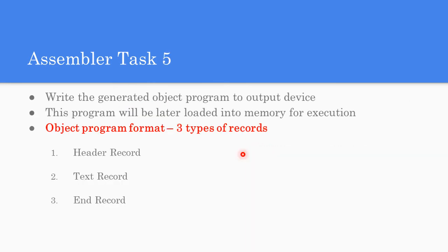The last and most important task is writing the object program, which will later be loaded into memory for execution. The object program format contains three types of records: the Header record, the Text record, and the End record.